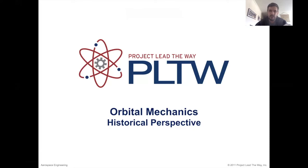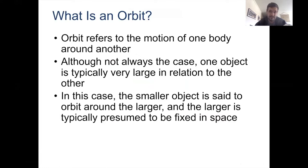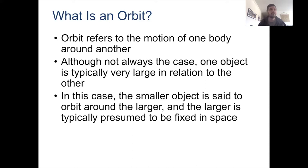In order to talk about orbital mechanics, we need to talk about what an orbit is. Next week we're going to be talking about the physics behind orbits. So an orbit is the motion of one body around another body. We use the word 'body' because things are different — the earth, which is a planet, orbits around the sun, which is a star. The moon orbits around the earth, satellites orbit around the earth. So 'body' just means something with mass.